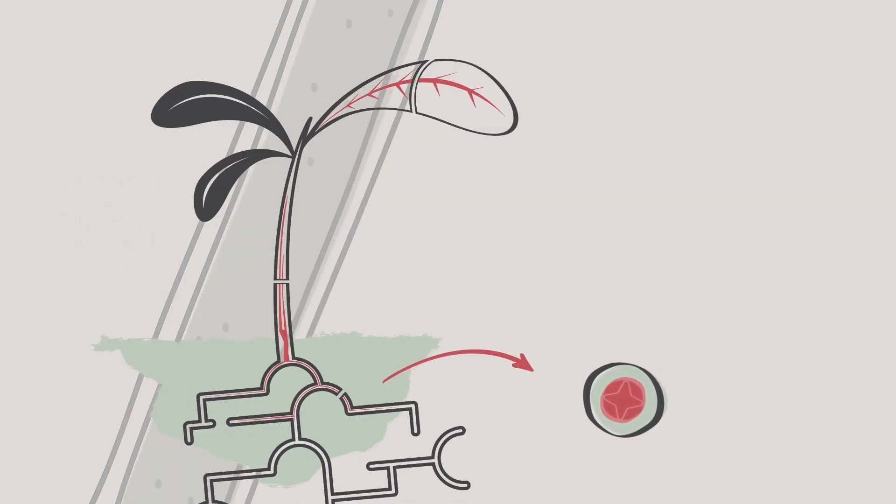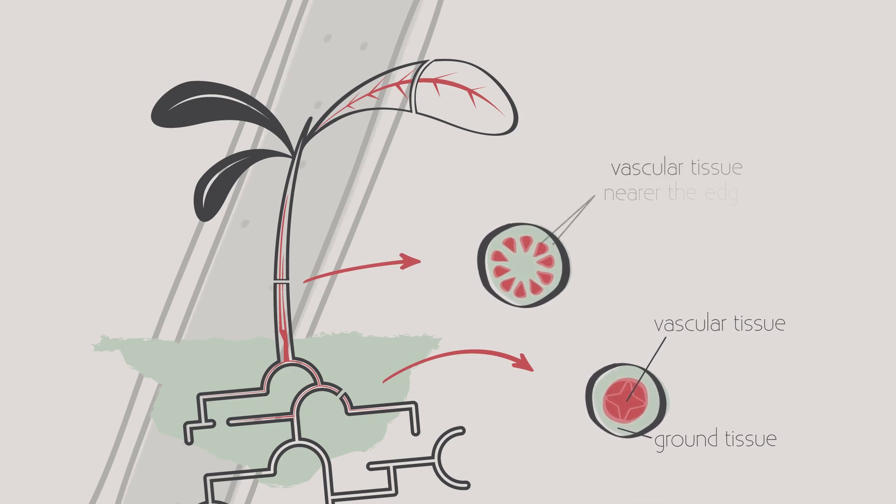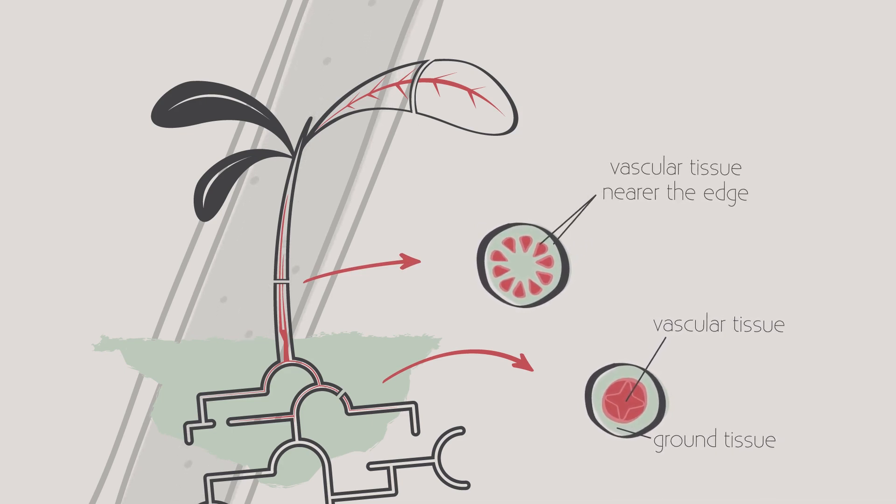Because of this, xylem vessels are tough, and it is why vascular bundles in the roots are in the center. They help prevent the plant from being pulled out of the ground. They're also more protected in the center. The stem, on the other hand, has to resist being squashed and bent, so it has the vascular bundles nearer the edge to give it strength and support.